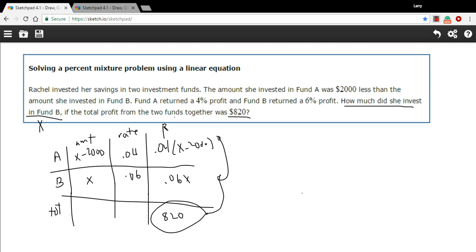So I can take this column here of the profit and form that into an equation. And it should look like this: 0.04 times X minus 2,000 plus profit from the other fund, 0.06 times X, is going to equal $820. Okay, so now we have one equation, just one variable X. So we can solve this for X and that should give us how much she invested in Fund B.